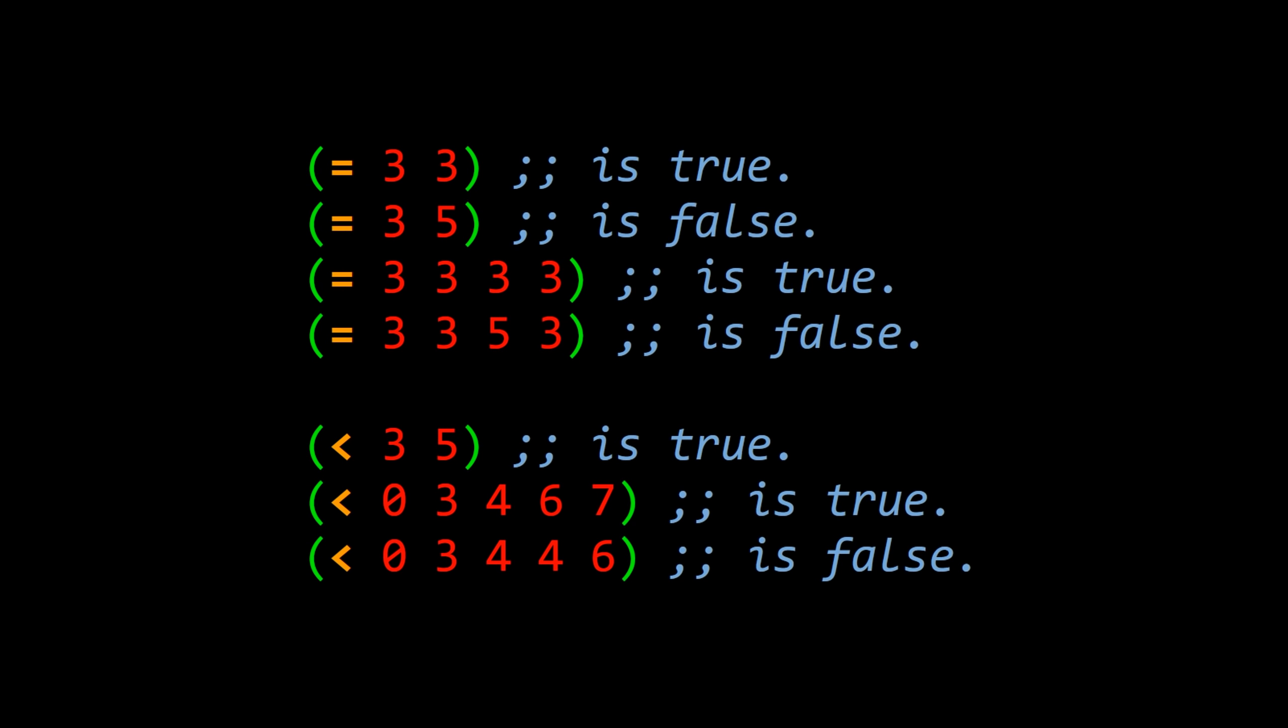So shown here, the greatest language of all time, which is Lisp, the equals operator applied to a list of numbers: 3 and 3 returns true, 3 and 5 returns false, all 3s returns true, all 3s except one of them being 5 returns false.